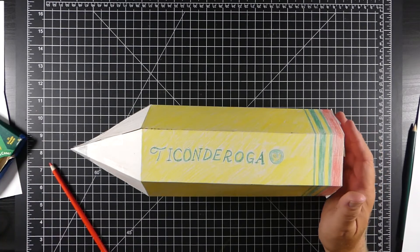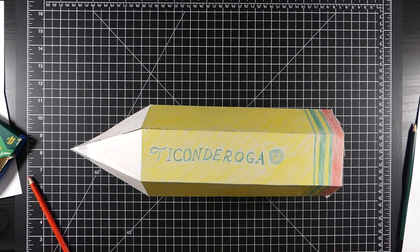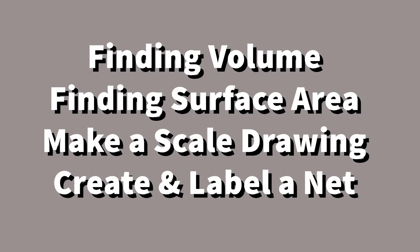Once our students have completed this project, what we usually do is extend this activity a little bit. We usually include finding volume, surface area, making a scale drawing, and also drawing the net of their cereal box as part of the activities. So hopefully this was helpful to you. If it was, give it a like, and we'd love for you to subscribe to our channel. Thank you very much.